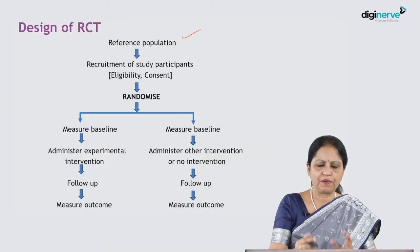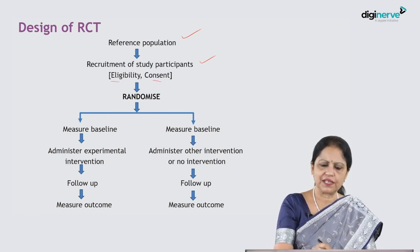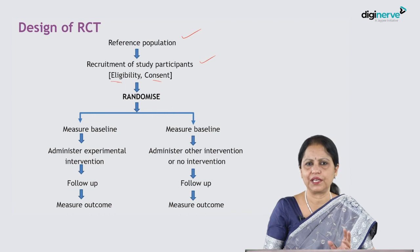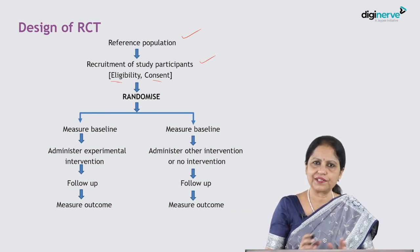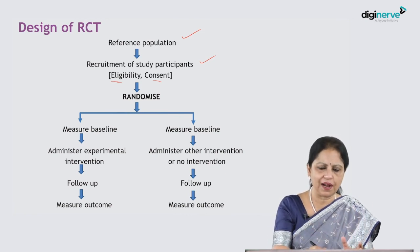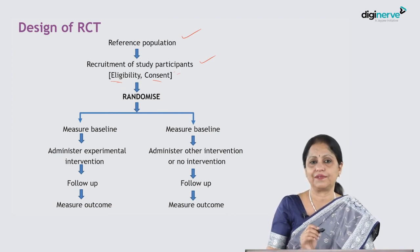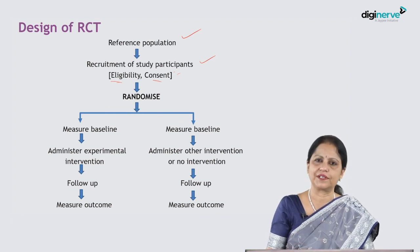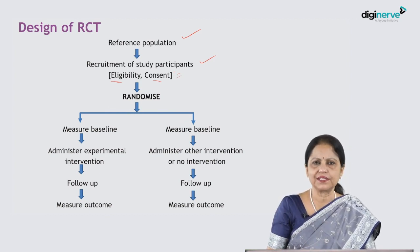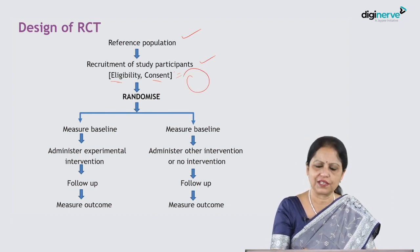The design of an RCT begins with a reference population from which study participants are selected. Participants are chosen according to eligibility criteria — inclusion and exclusion criteria — as discussed in earlier sessions. We take their informed consent, because no one can be forced to participate, as also covered in sessions on biomedical ethics. Those who agree to participate form our study population.